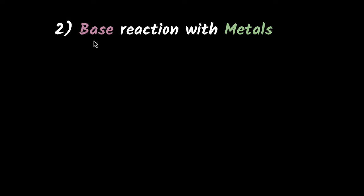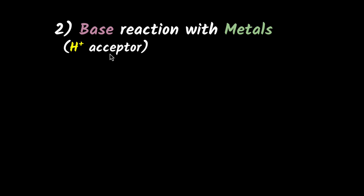Let's consider what happens when you have a base reacting with metals. Remember that bases are hydrogen ion acceptors — they love to accept hydrogen ions. But metals do not give you hydrogen ions, and therefore bases will usually not react with metal. There will be absolutely no reaction with bases and metals.